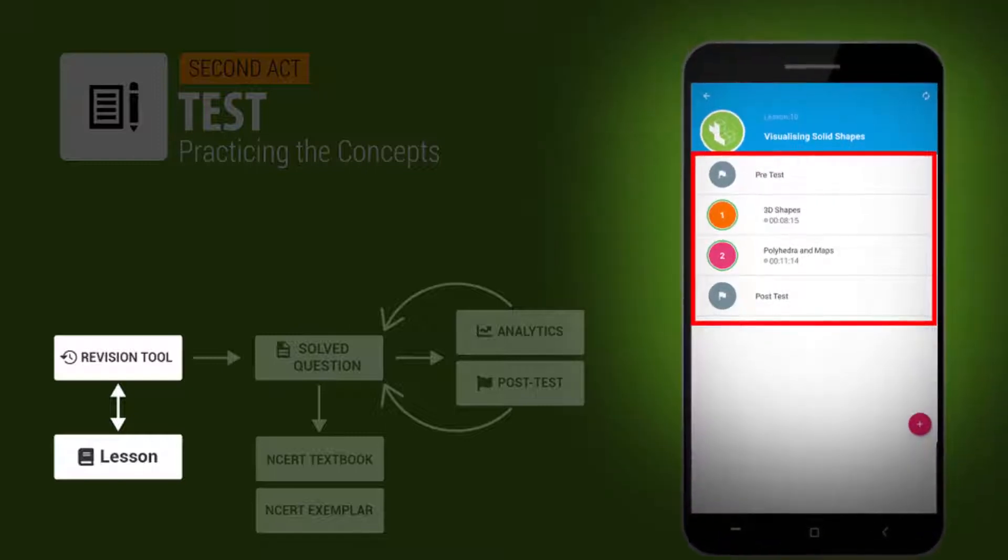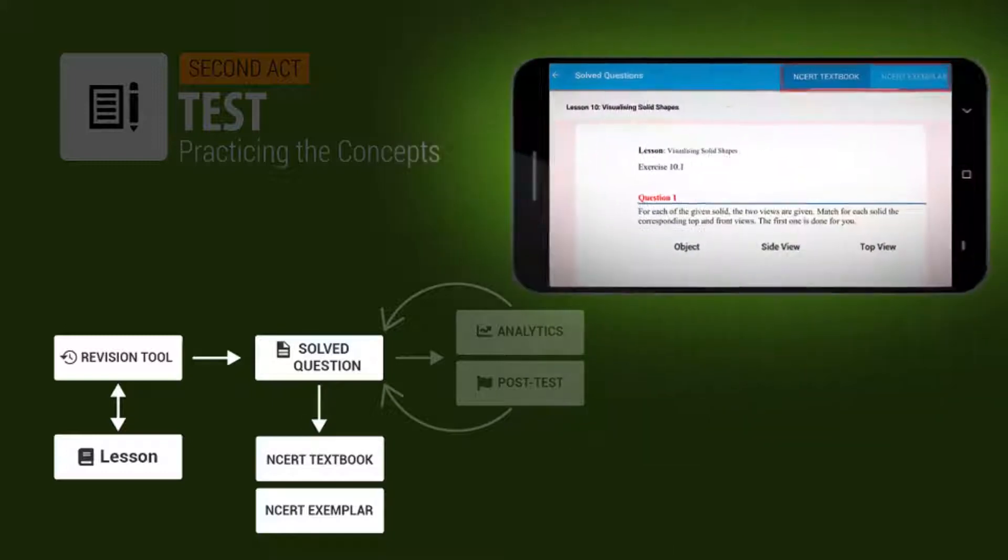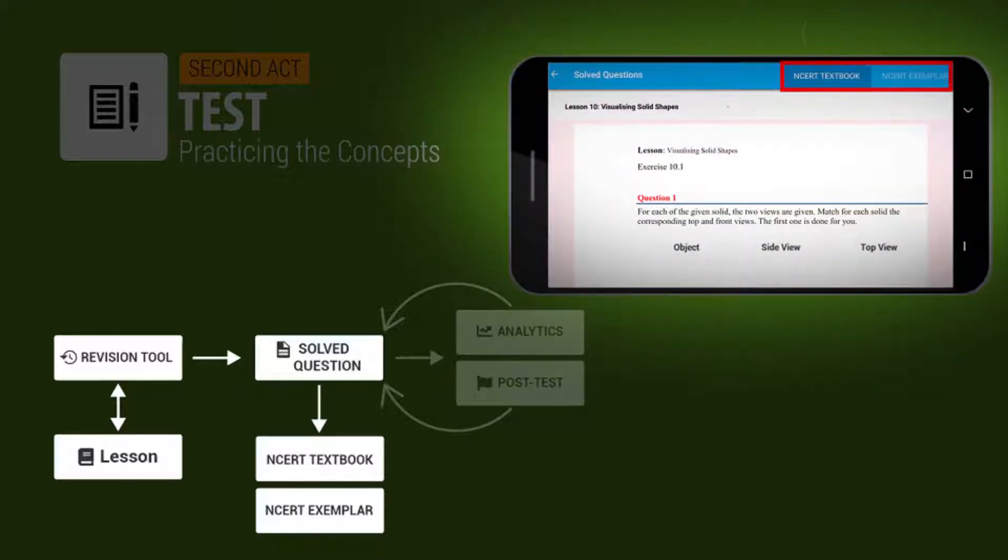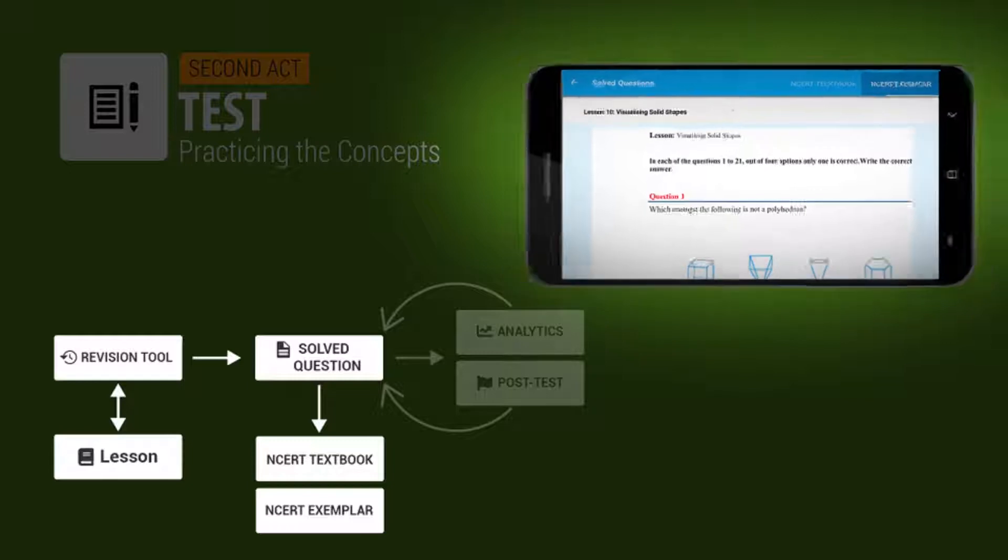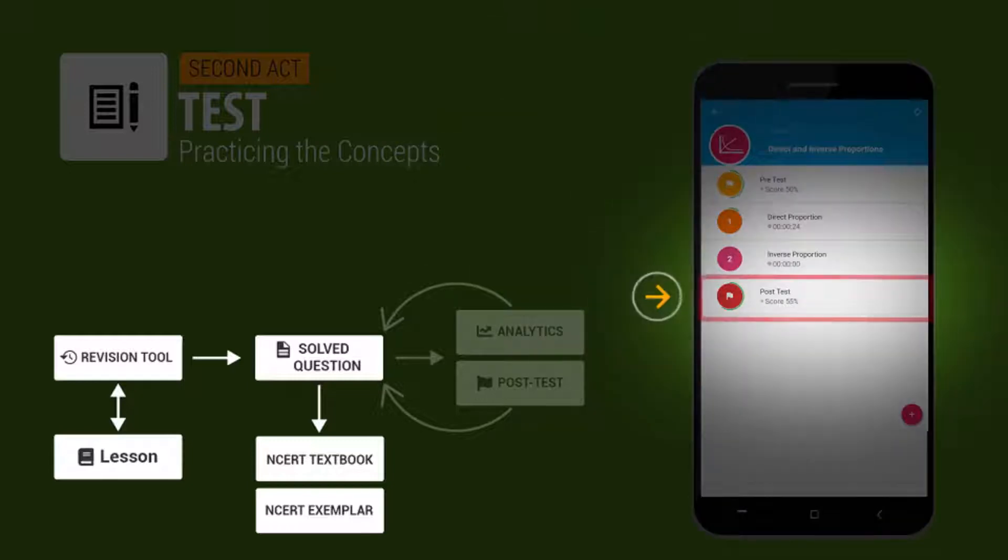Once you are confident that you have understood all that needs to be done in the lesson, you move to the insert textbook and insert exemplar questions. Ensure that you do many of these questions. You improve your understanding and then take the post-test again. The post-test scores will give you a good idea of how well you have understood what was taught.